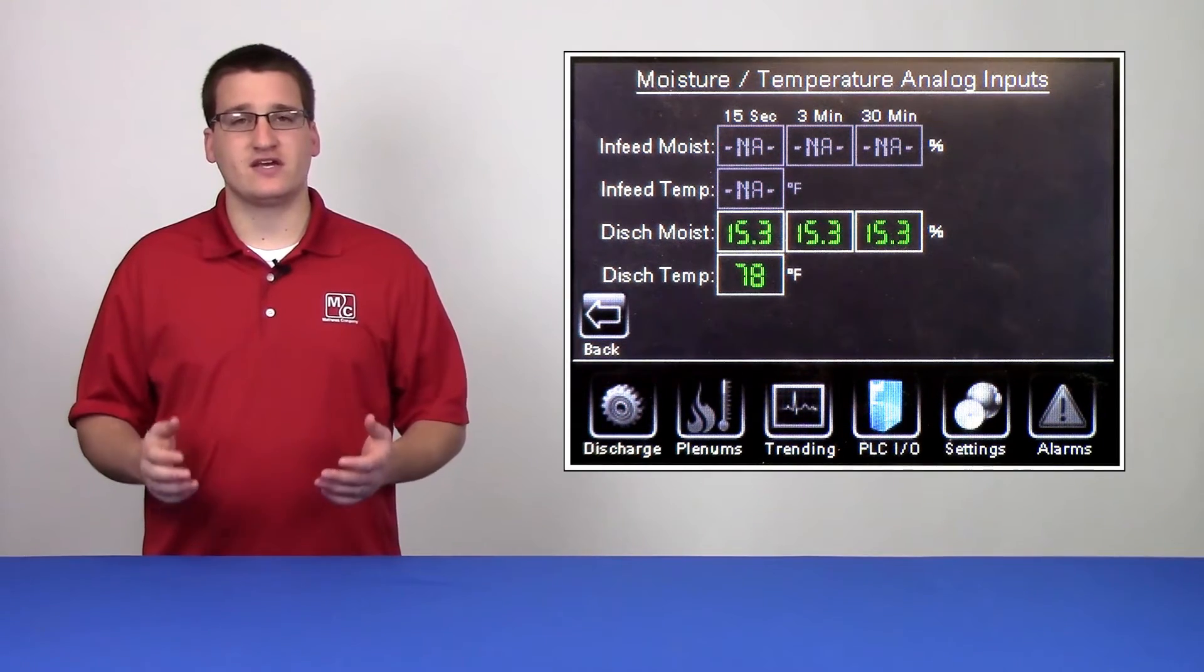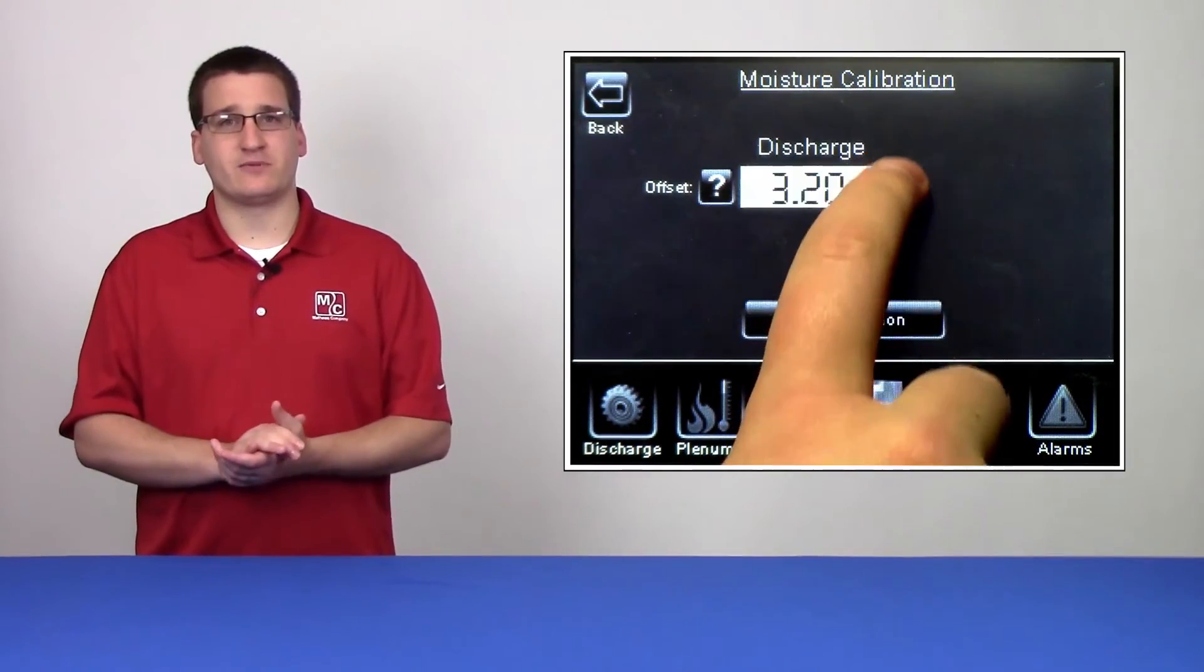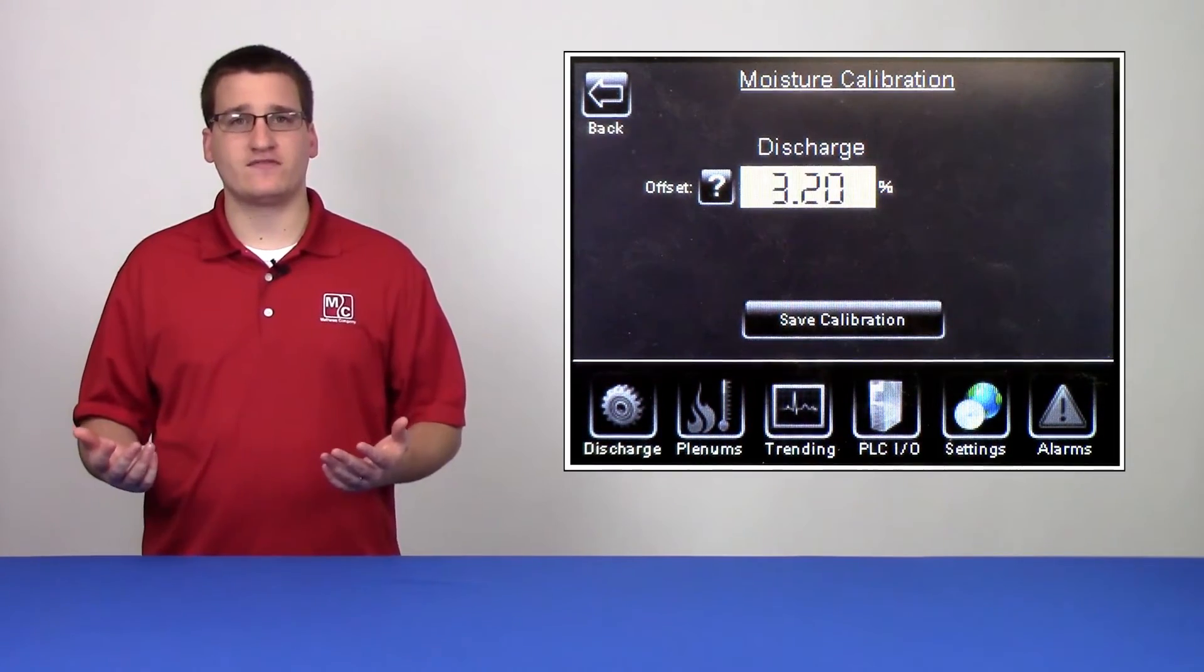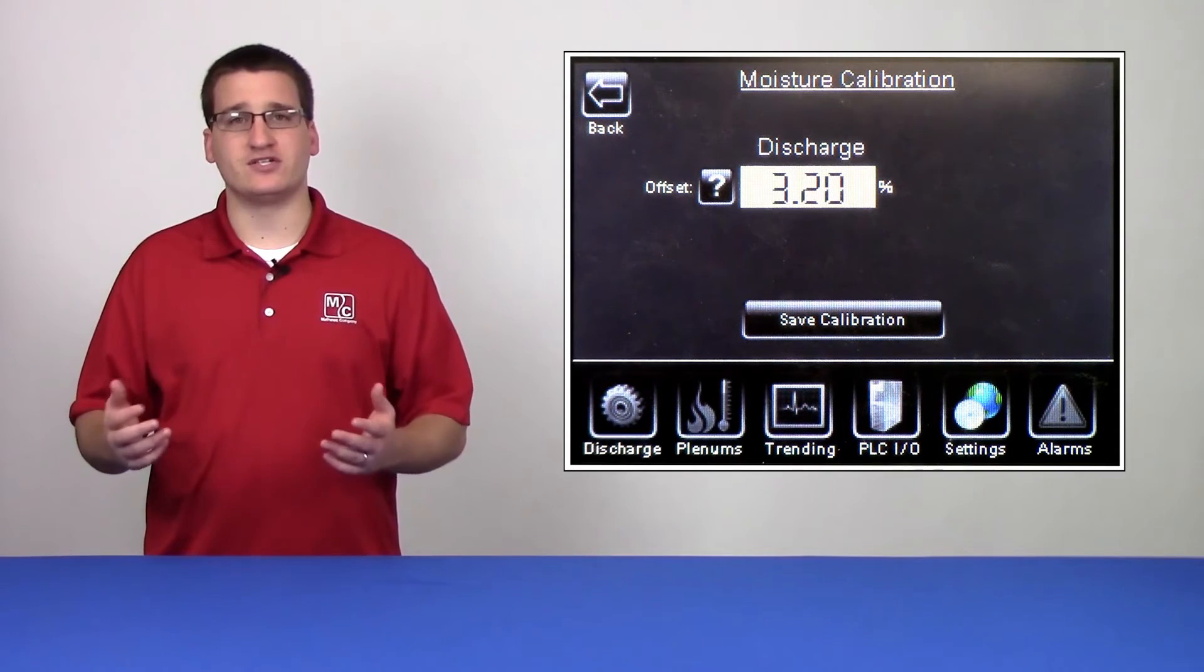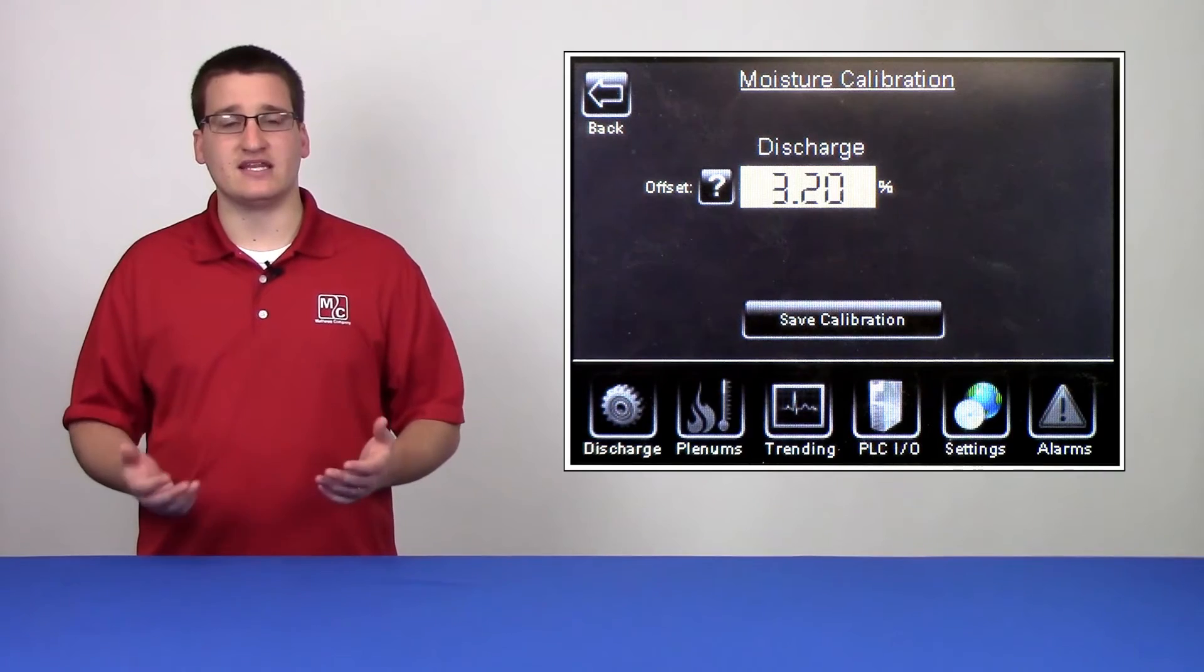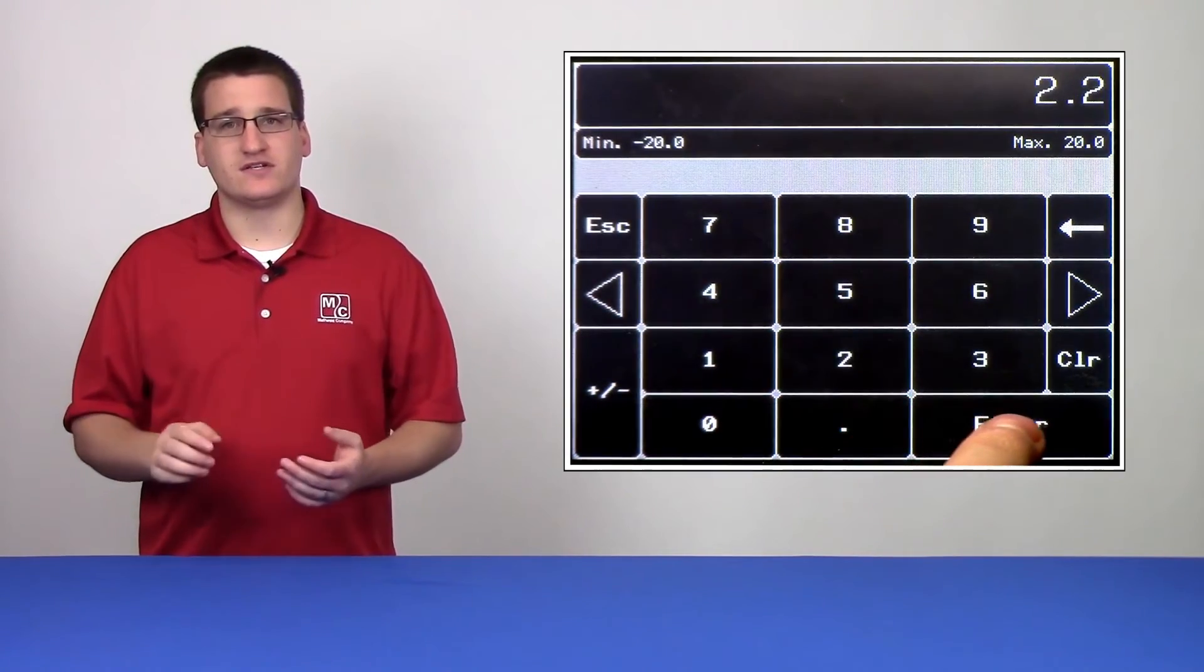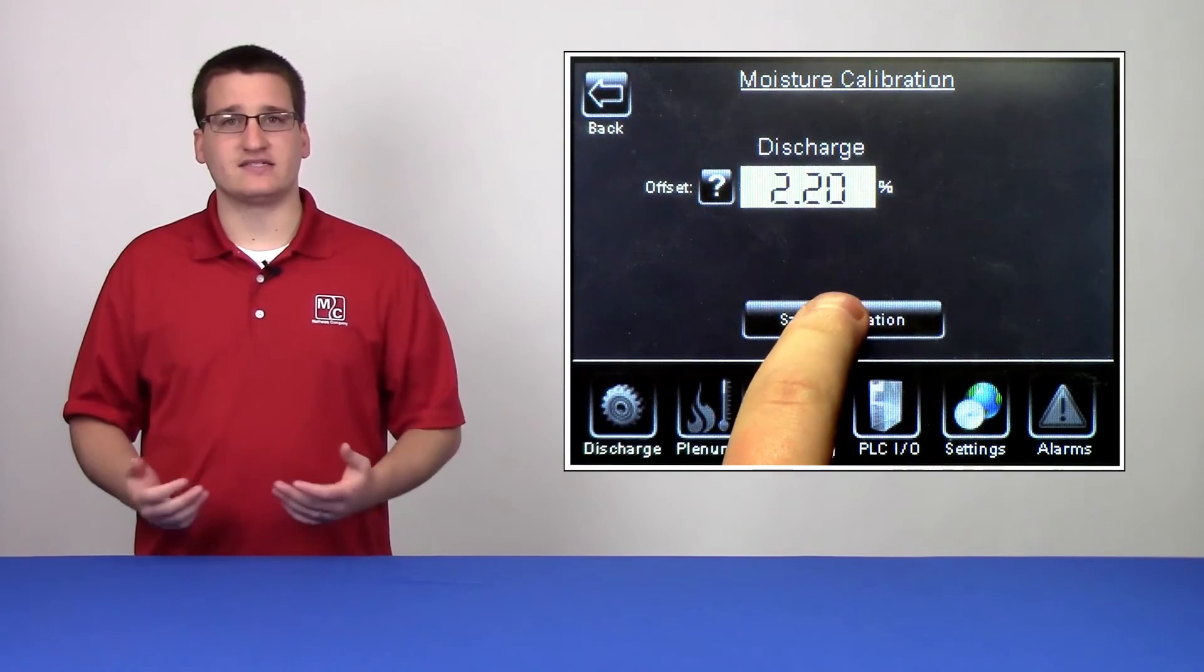To fix this, you go to the HMI, hit settings, and then sensor calibration. You'll notice that there's an offset field. We want to adjust this offset by the difference we calculated earlier. In this case, we want to change 3.2 to 2.2 and hit save calibration.